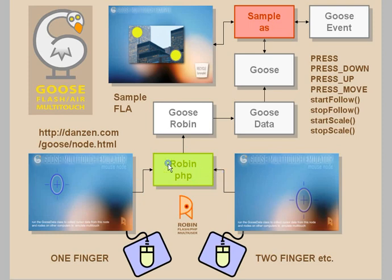The data from our cursors goes into Robin. Robin is an open source Flash PHP multi-user system, also available at Flash Feathers or robinflash.wordpress.com. We've got that running on Dan's end, so you don't really need to worry about it. But if you want, you can get your own mouse emulators up and running. If you use Goose a lot, you might consider doing that. It's quite easy — go to robinflash.wordpress.com, download the zip file, put the PHP pages on your server.